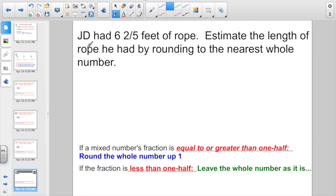Time for some story problems. Here we see J.D. had 6 and 2/5 feet of rope. Estimate the length of rope he had by rounding to the nearest whole number. Half of 5 is 2 and a half, so 2 is less than 2 and a half. So I'm just going to keep this rounded down to 6 feet of rope.